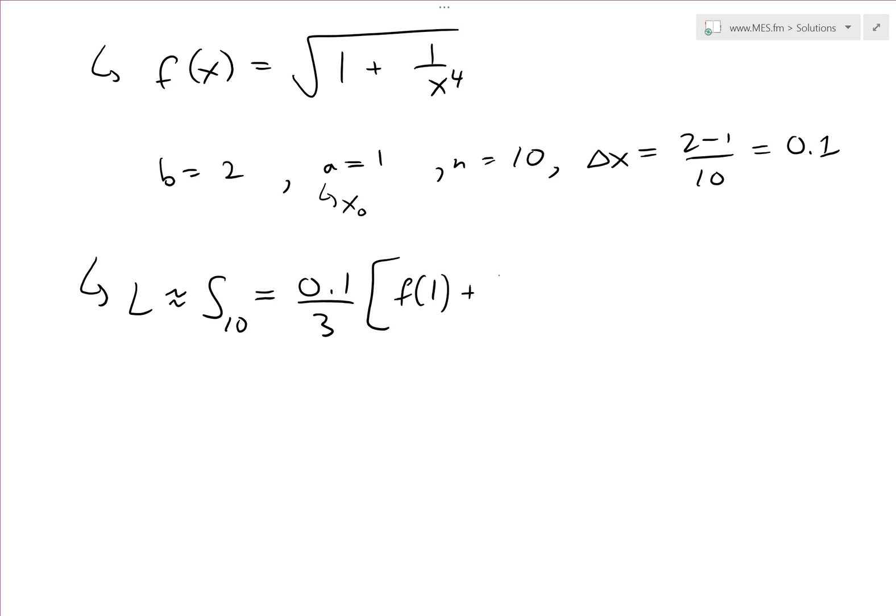So we have 4 f(1.1) plus 2 f(1.2) plus 4 f(1.3). Keeps going on and on until we get 2 f(1.8) plus 4 f(1.9). And then the last one, f(2).